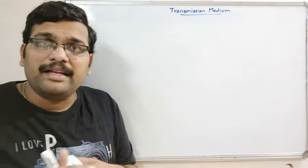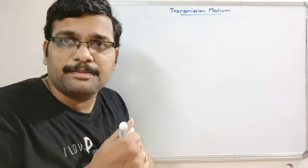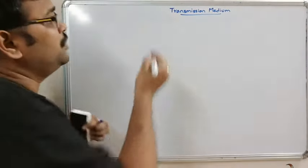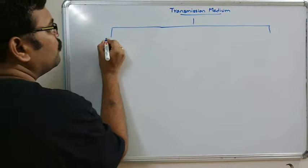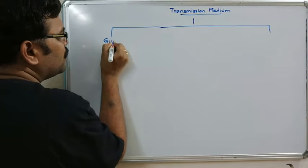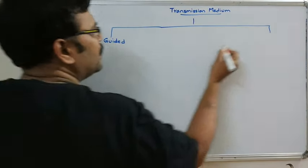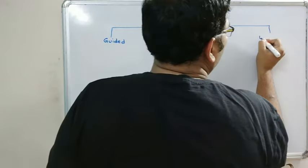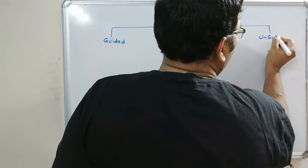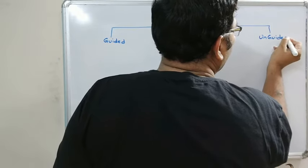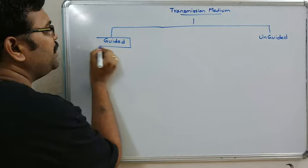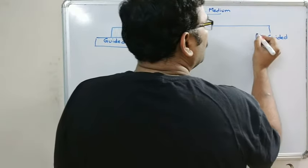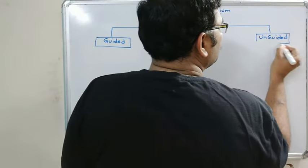Now we will categorize transmission media. It is categorized in two ways: one is guided and another one is unguided — guided transmission medium and unguided transmission medium.